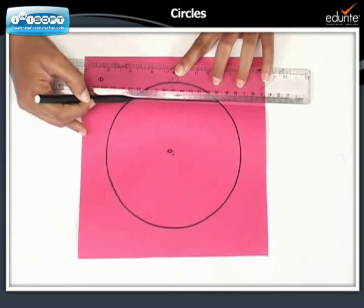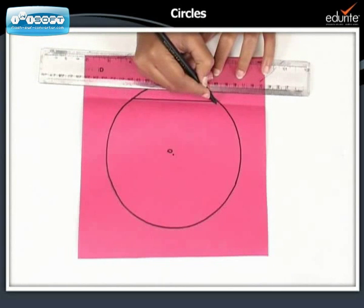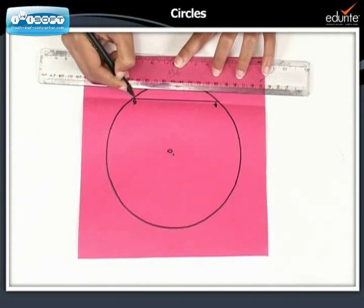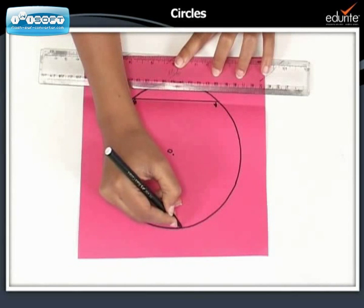Let us draw the line segment and name the endpoints as A and B. Let us mark any point C on the major arc.